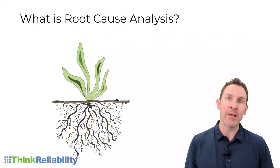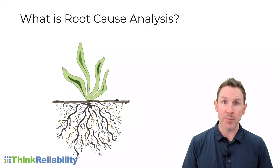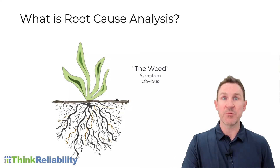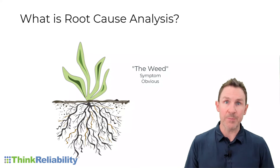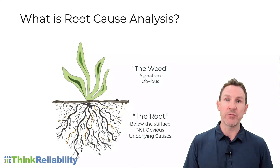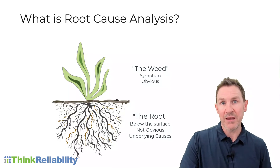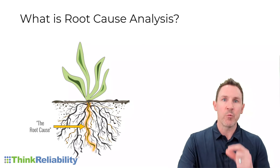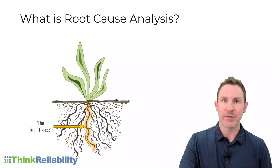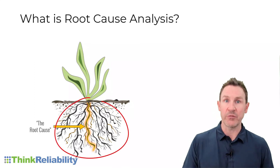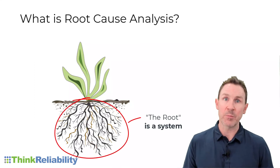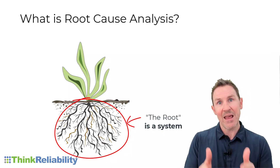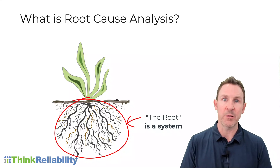This also highlights where we see the miscommunication around the term root cause analysis. We like the analogy that you can't just focus on the symptoms of the problem — you've got to get beneath the surface to that system of causes. But the error that organizations often make is they want to find the root cause, as in one singular cause to identify and eliminate. In reality, it took all of the causes, and if we take that systems approach it gives us more options to choose from, so we can really pinpoint and select which solutions are best to prevent recurrence.